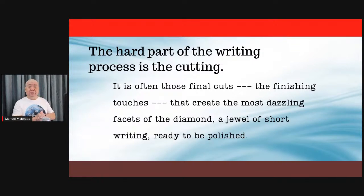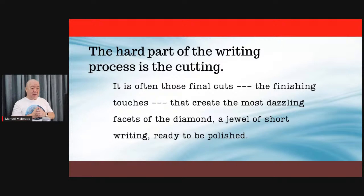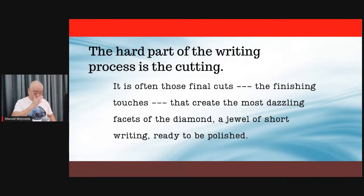The hard part of the writing process is the cutting, the trimming down. You imagine a tree, and you don't want it to have so many branches and leaves and flowers, so you prune them down so that the barest minimum is left. As Dr. Roy Peter Clark said, it is often those final cuts — the finishing touches that create the most dazzling facets of the diamond, a jewel of short writing ready to be polished. You always look at your writing as a rough diamond stone, and you have to really polish it, trim it, so that the impurities can be removed. That is how to look at the editing process.